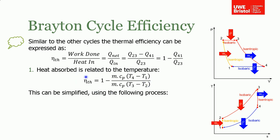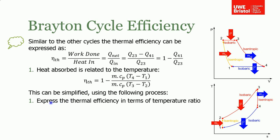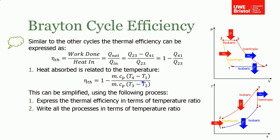The approach is: first, express the thermal efficiency in terms of temperature ratios rather than absolute temperatures. Second, write all the processes in terms of temperature ratios going from one to two, two to three, and three to four. Then substitute those temperature ratios into the thermal efficiency expression to arrive at a clean derivation.